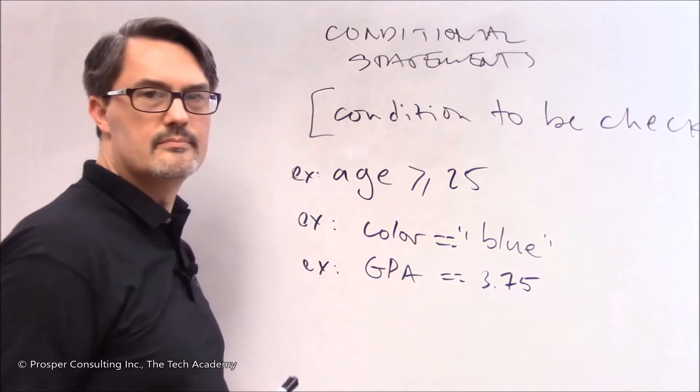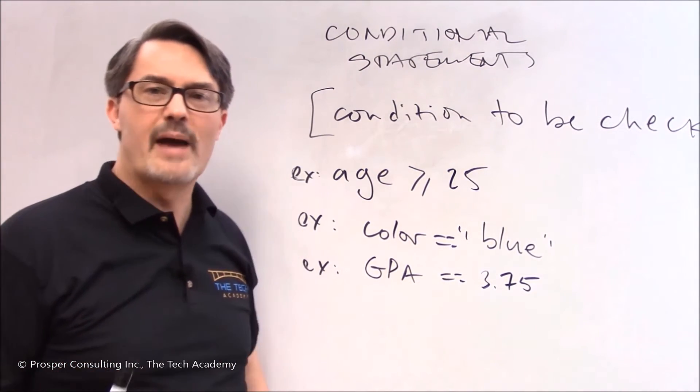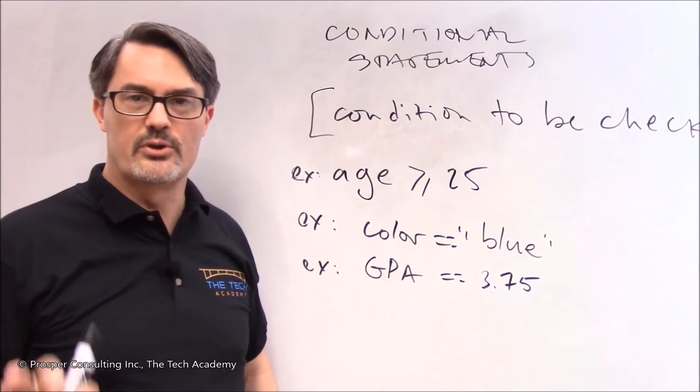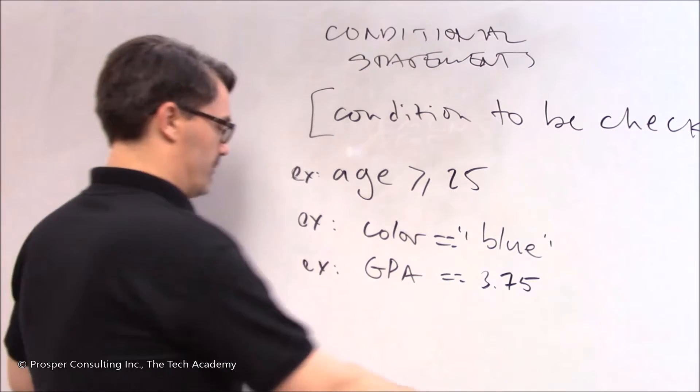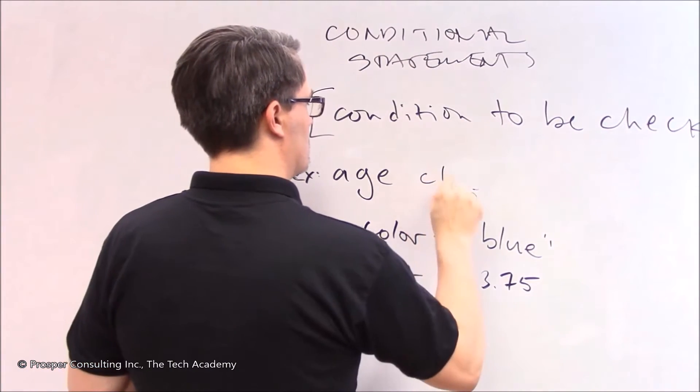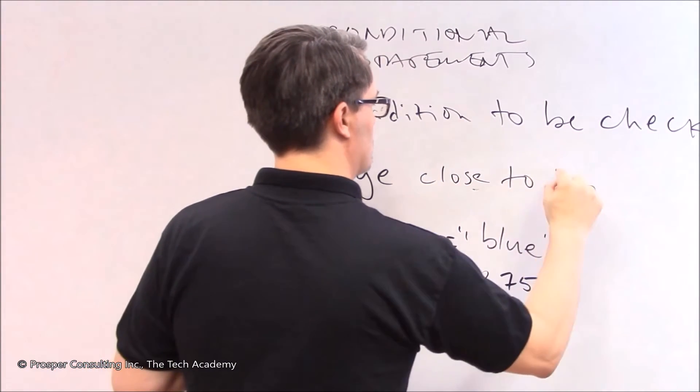This goes back to the fact that instructions to computers cannot be unambiguous. You can't have, for example, age close to 25.